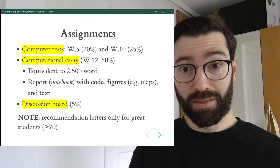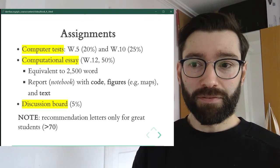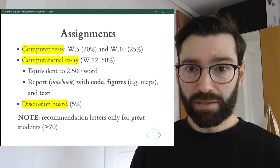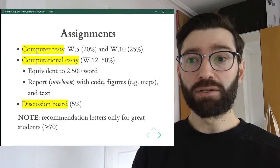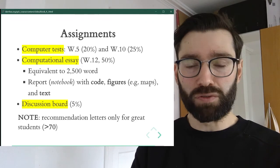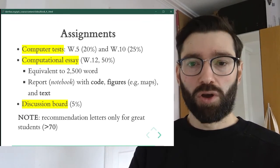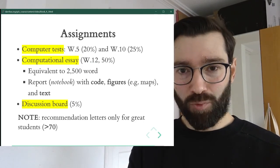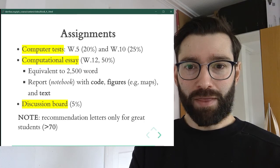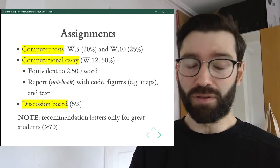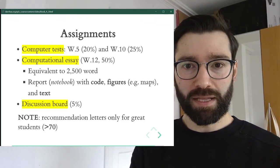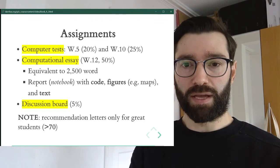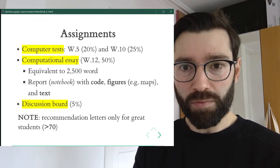The final component is 5% of the mark that goes into the discussion board. You'll get these five points simply for signing up on Teams and contributing to the discussion — asking a question, answering somebody else's question, or more generally participating within the first month of the course. By halfway through, everyone's realized Teams is really useful and gets on anyway, but I want to make sure everyone gets up to speed as soon as possible.